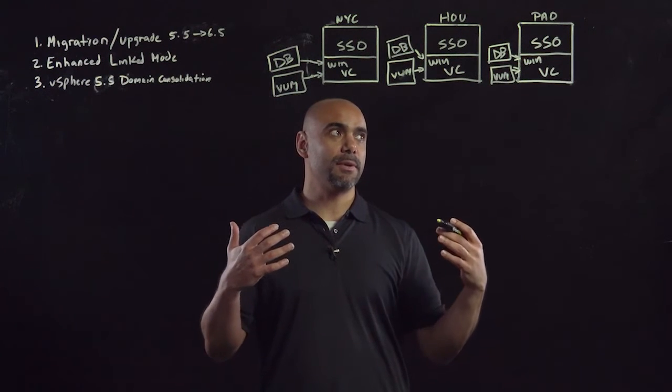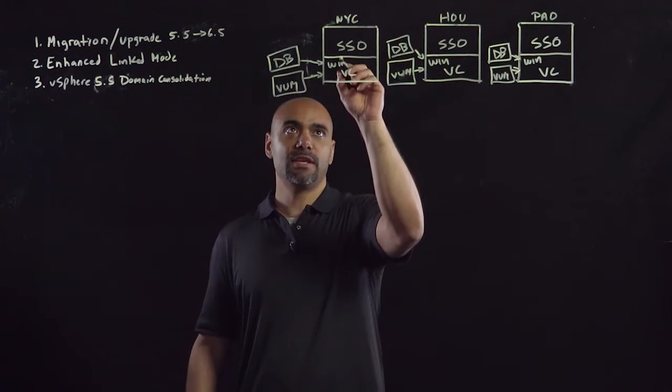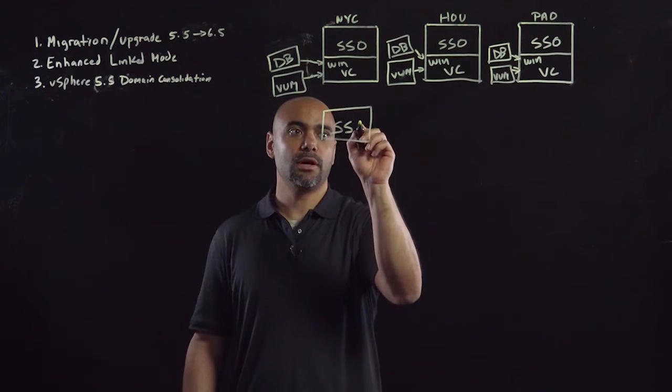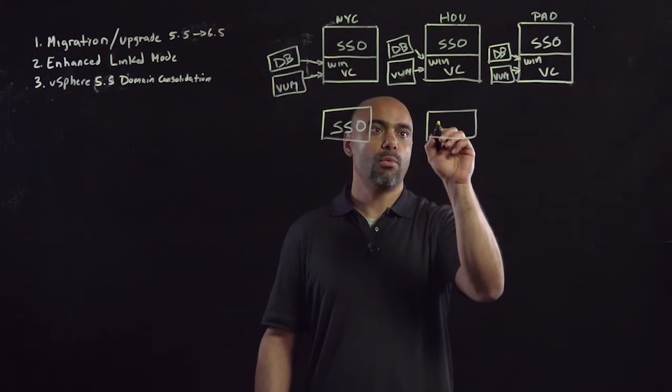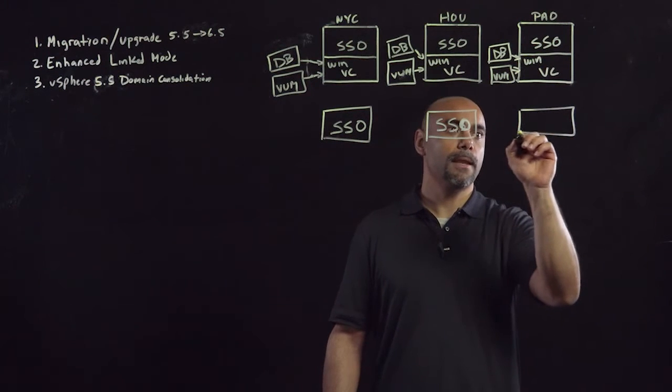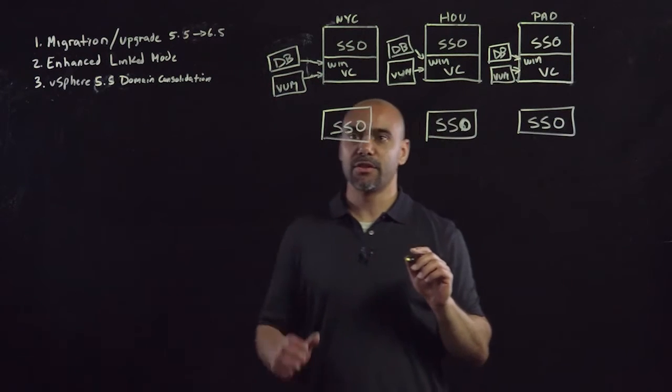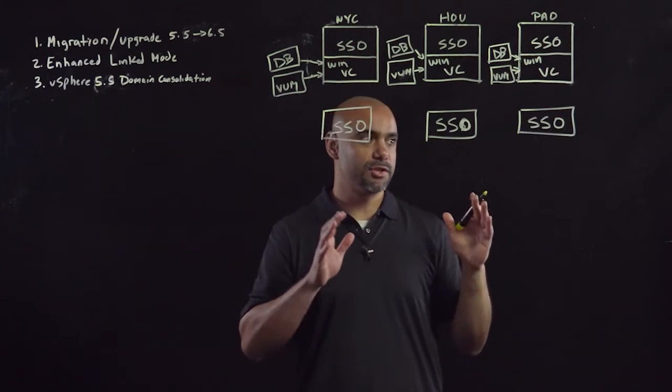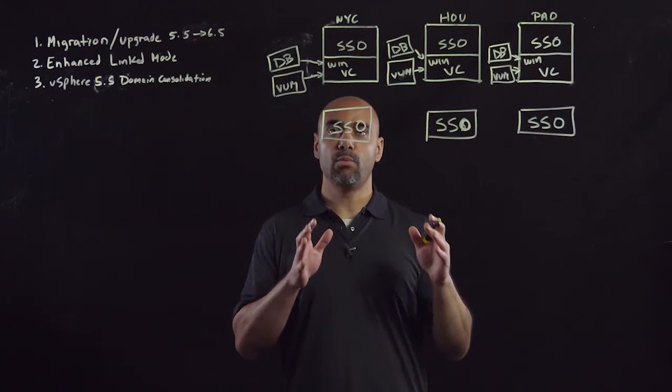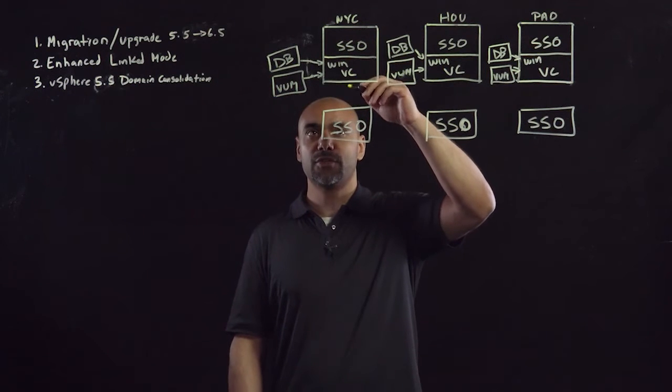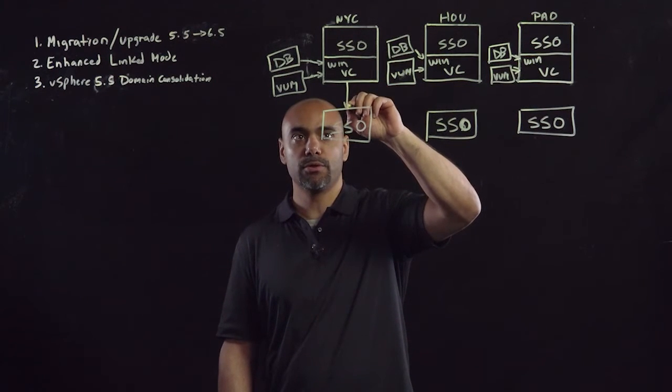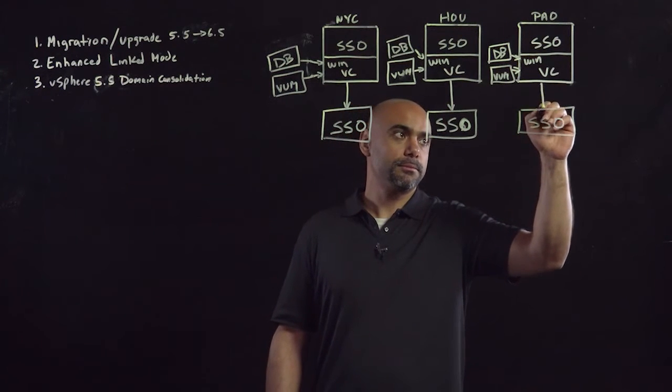So our first step to getting them consolidated is we are going to externalize this SSO by deploying a new SSO server within each of the sites. So one in NYC, one in Houston, and one in Palo Alto. So now I've deployed a brand new SSO server in each site. The next step that I'm going to do is I want to repoint the web client service, the vCenter service, and the inventory service from this embedded deployment to the external SSO. So we're going to repoint those at each site.